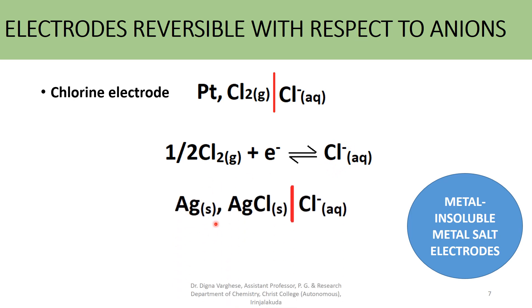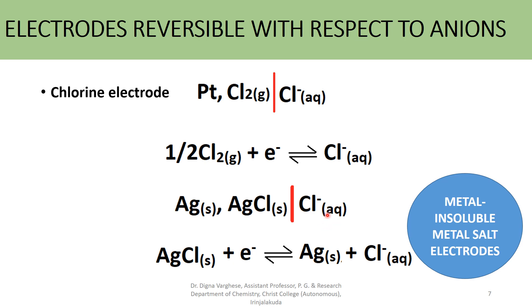Another example is the silver–silver chloride electrode, represented as: Ag(s) | AgCl(s) | Cl⁻. Because of the chloride anion, this electrode is reversible. The reaction is: AgCl + e⁻ → Ag + Cl⁻. It is more convenient to employ an anion-reversible electrode obtained by a metal in contact with one of its insoluble salts — here silver chloride is partially soluble — which is immersed in a soluble salt of the same anion.